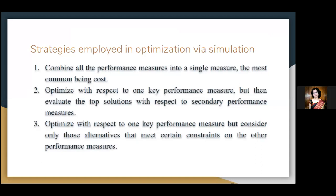The second strategy: optimize with respect to one key performance measure, but then evaluate the top solutions with respect to secondary performance measures. For example, the MHS could be optimized with respect to expected cost and the cycle time could be compared across the top five designs. This approach requires additional information on more than just the best solution to be maintained.